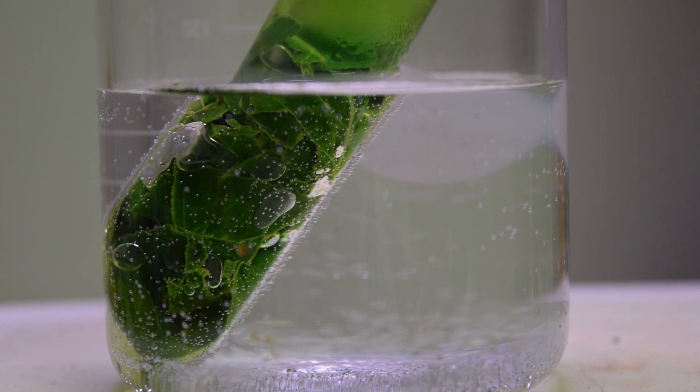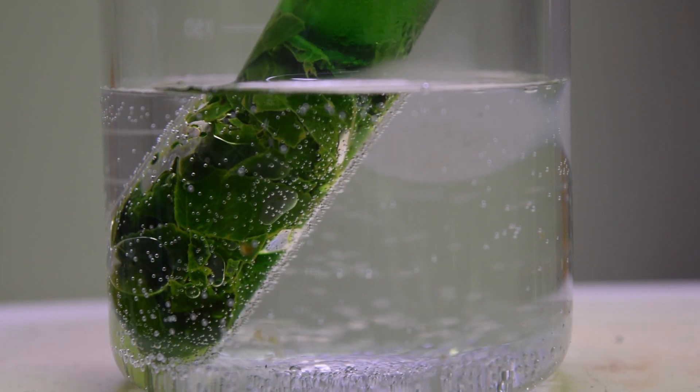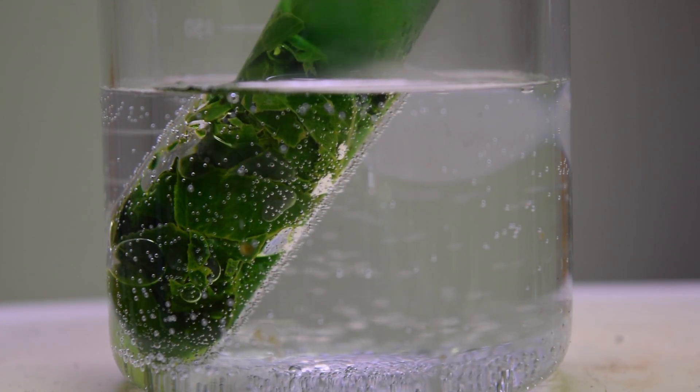The ethanol will begin to boil and the dissolution of chlorophyll will start to turn the ethanol a very dark green color.